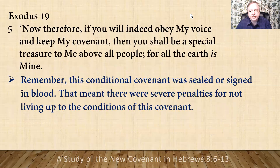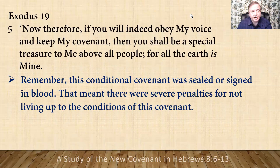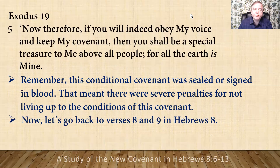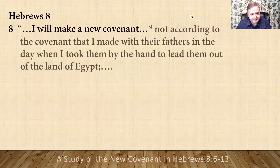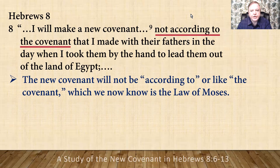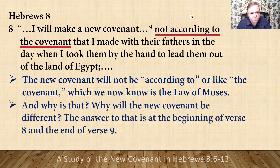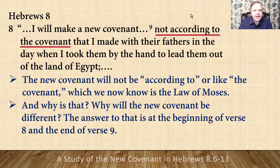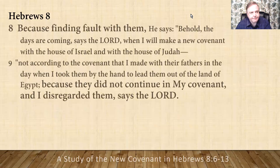Now, remember, this conditional covenant was sealed or signed in blood. That meant there were severe penalties for not living up to the conditions of this covenant. Now let's go back to verses 8 and 9 in Hebrews 8. The new covenant will not be according to or like the covenant — which we now know is the law of Moses. Why will the new covenant be different? The answer is at the beginning of verse 8 and at the end of verse 9.